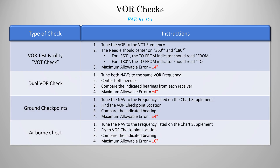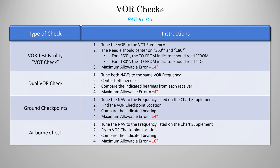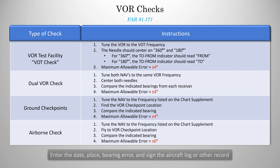Now, regardless of whichever of these checks you decide to use, the FARs do require that after performing a VOR check, you must enter the date, place, bearing error, and sign the aircraft log or other record. Most airplanes will have a designated form for this.